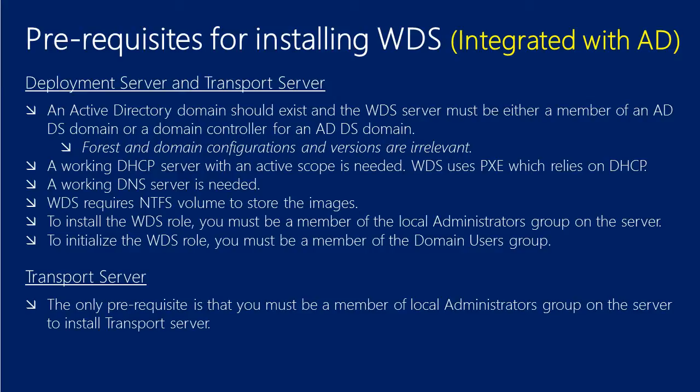You need a working DHCP server with an active scope because WDS uses PXE which relies on DHCP. You also need a working DNS server. You need an NTFS volume to store your Windows images. To install the WDS role, you must be a member of the local administrators group on the WDS server. For initializing the WDS server, you must be a member of the domain users group. If you are planning to install Transport Server only, your only prerequisite is to be a member of the local administrators group on the server.